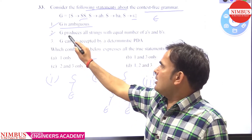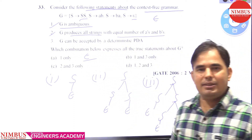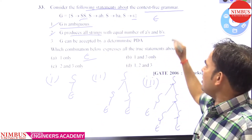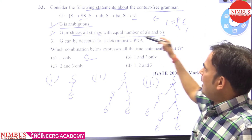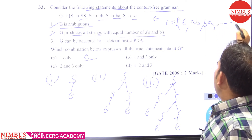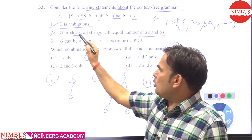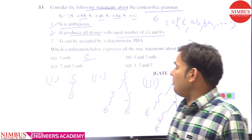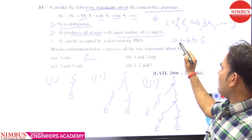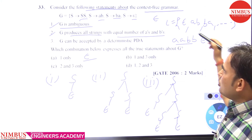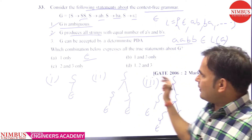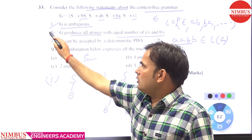Let's check the second statement: G produces all strings with equal number of A's and B's. This is not true. The language generated by the grammar includes epsilon, AB, BA, and so on. For example, AABB has equal numbers of A's and B's, but AABB does not belong to L(G) — the language generated by the given grammar. So this statement is wrong.